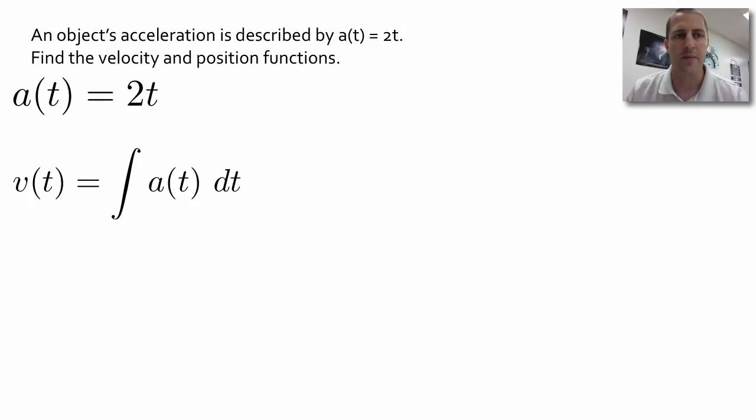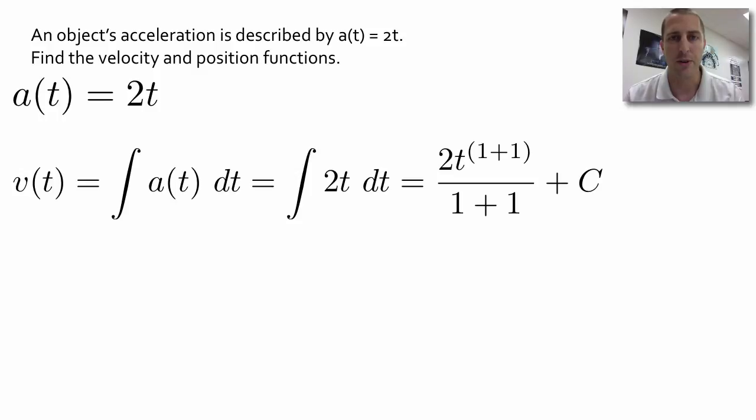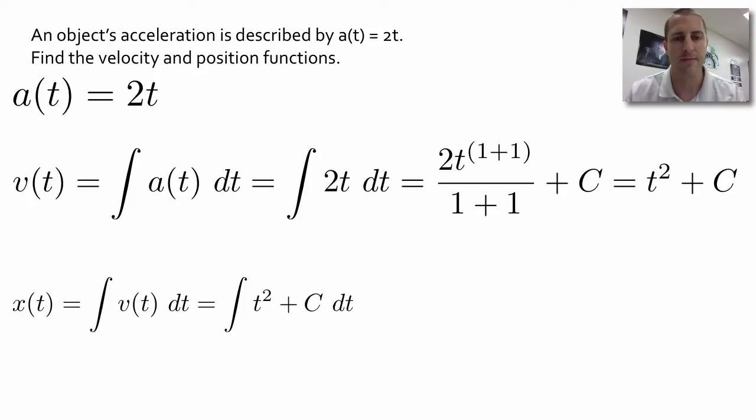Let's try this out. The acceleration in this problem is 2t. We want to find the velocity function. We need to take the integral of the acceleration function. The integral of 2t, we follow the rule, and we get t² + C. If we want to find the position function, let's take the integral of that velocity function.